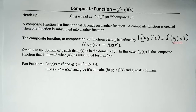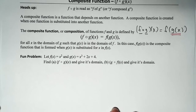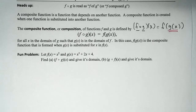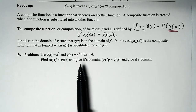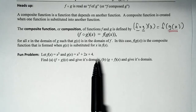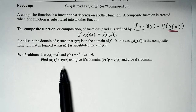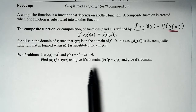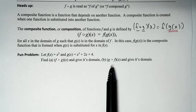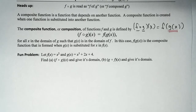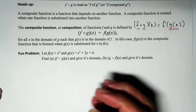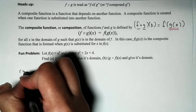Let's go ahead and work through our problem. We have F of X equals X squared, and G of X equals X cubed plus 2X plus 4. We want to find F of G of X, then G of F of X, and then state the domain.